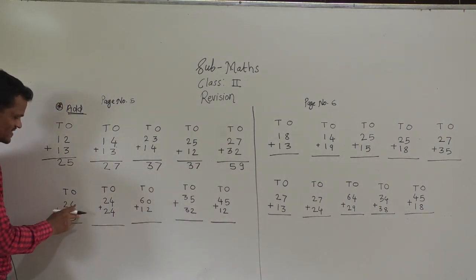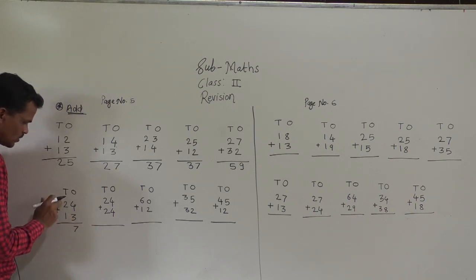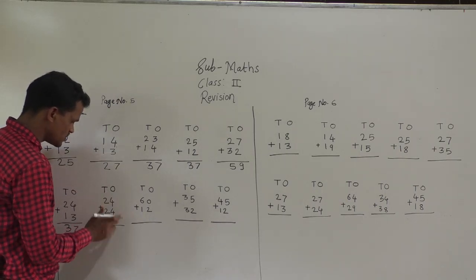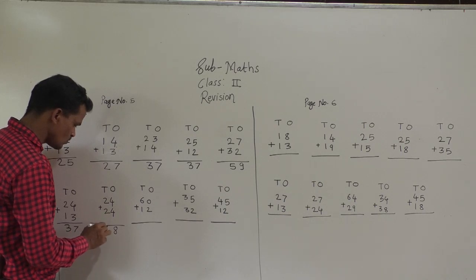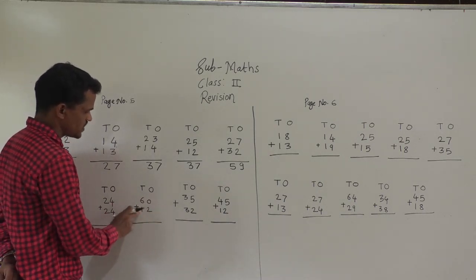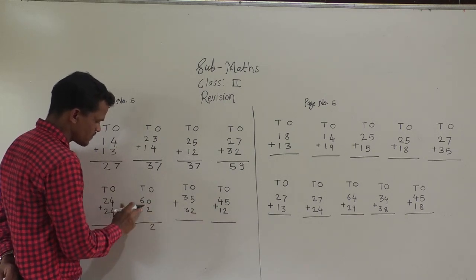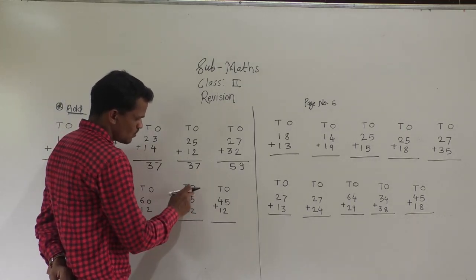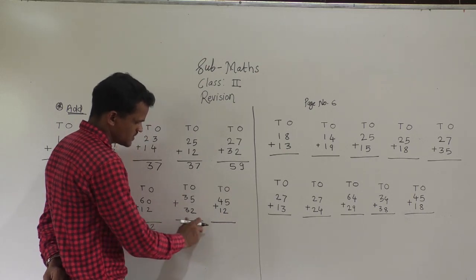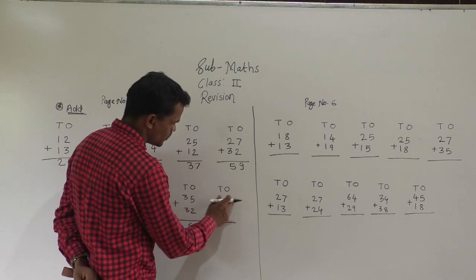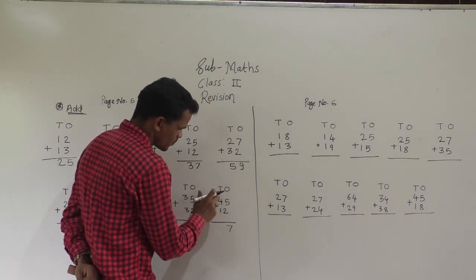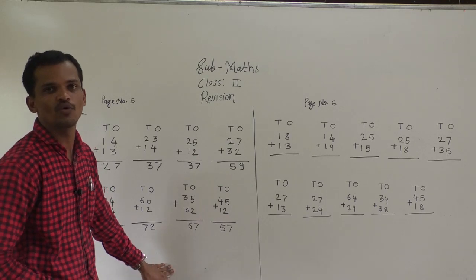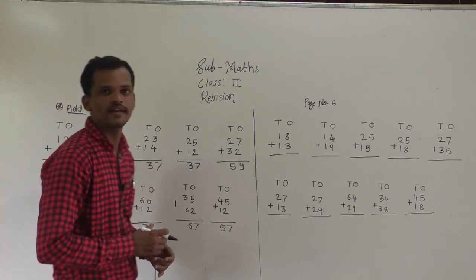Next example: 24 plus 13. 4 plus 3 is 7, 2 plus 1 is 3, so 37 is the answer. Then 24 plus 24: 4 plus 4 is 8, 2 plus 2 is 4, so 48 is the answer. Then 60 plus 12: 0 plus 2 is 2, 6 plus 1 is 7, so 72 is the answer. Then 35 plus 32: 5 plus 2 is 7, 3 plus 3 is 6, so 67 is the answer. Then 45 plus 12: 5 plus 2 is 7, 4 plus 1 is 5, so 57 is the answer. These are very simple examples — just add the columns and write the answer.